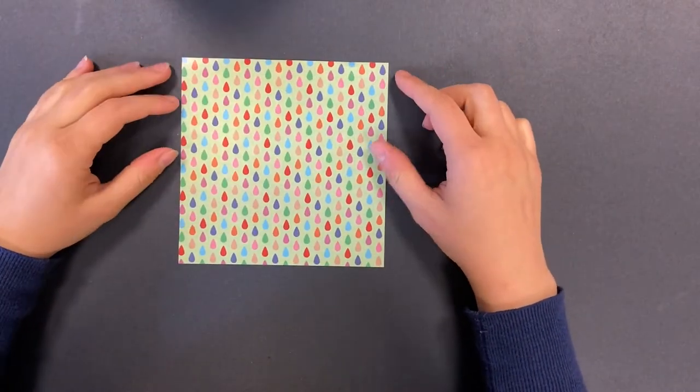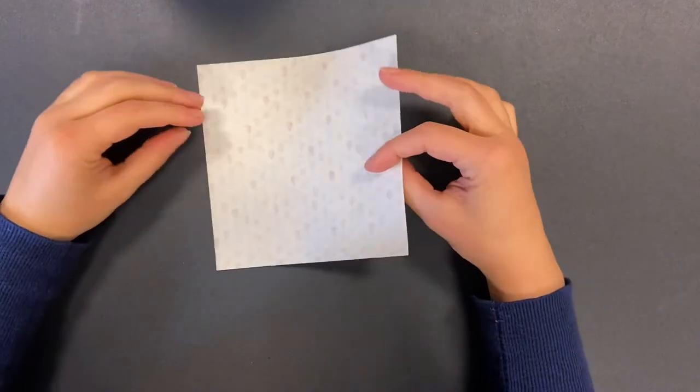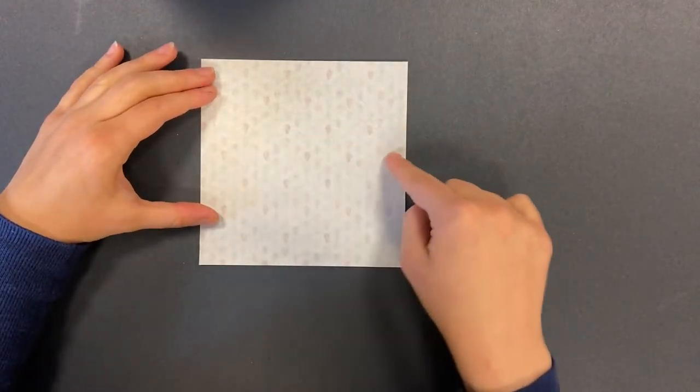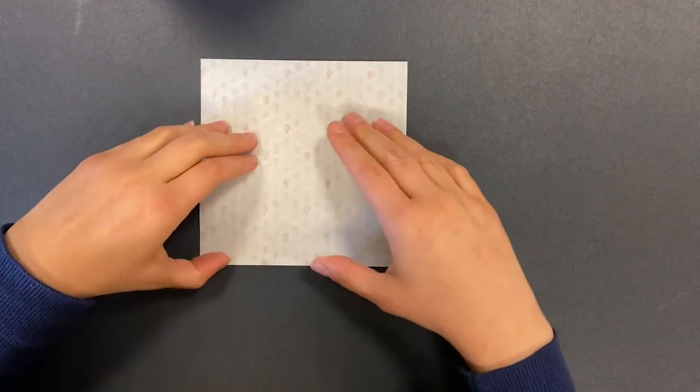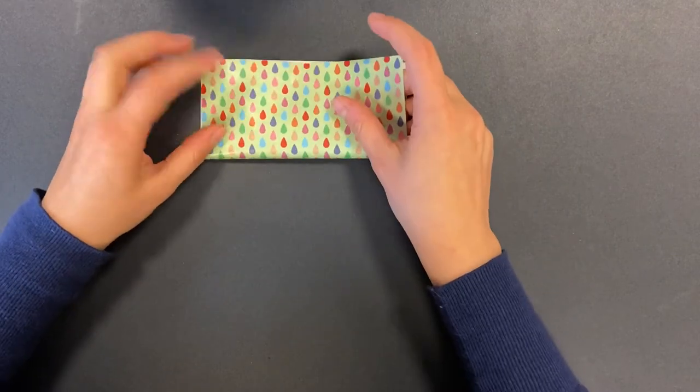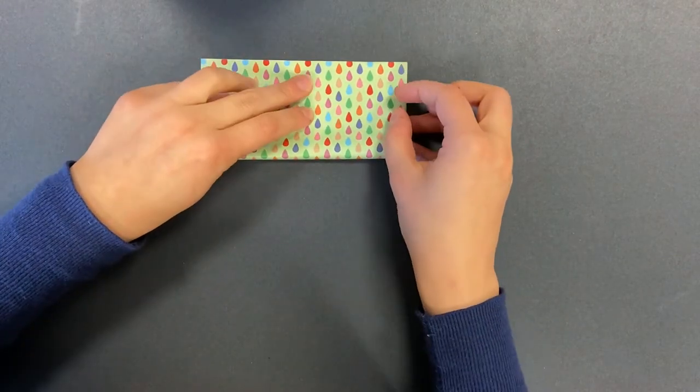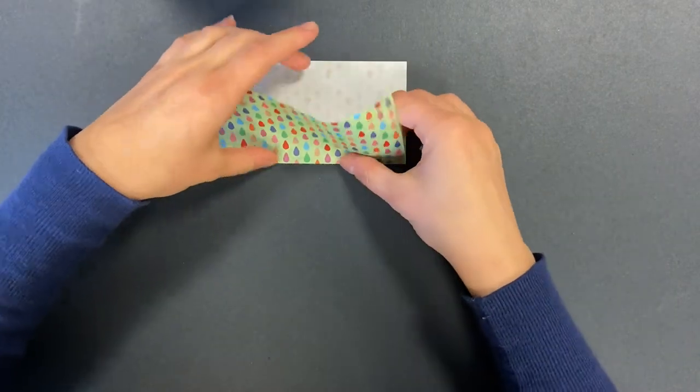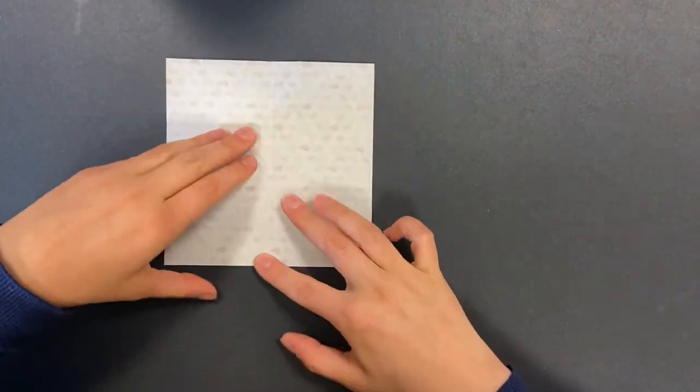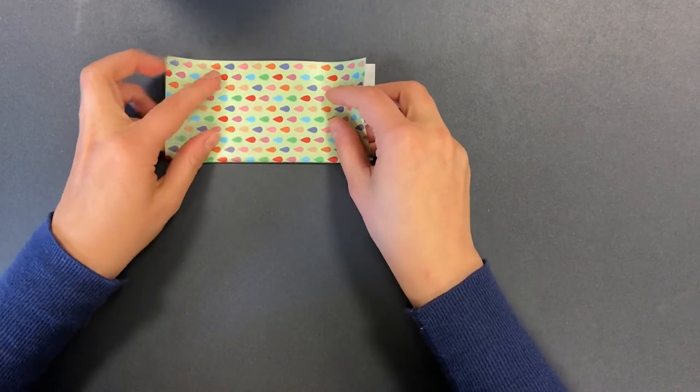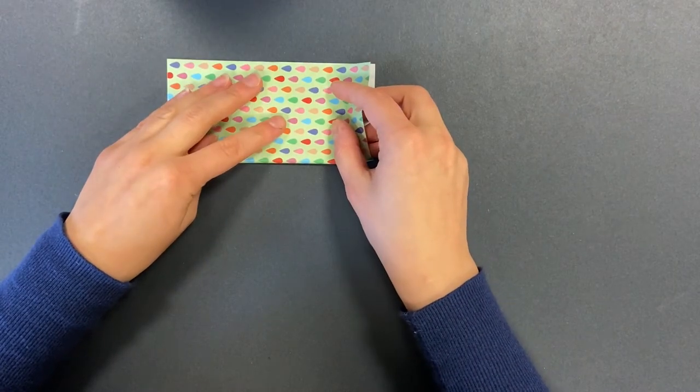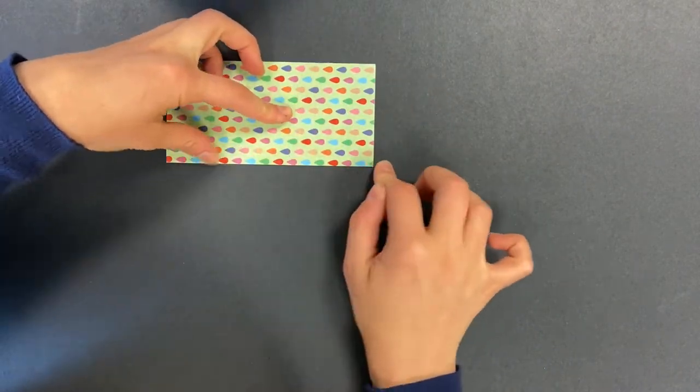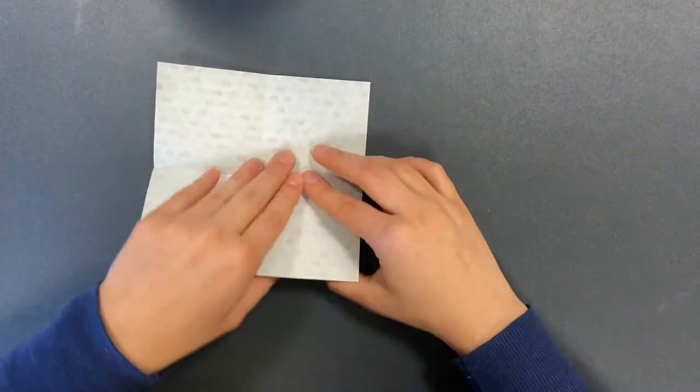All right, so we're going to start with the pattern side down. Fold the paper in half both ways. In half one way, open. And then in half the other way. Open.